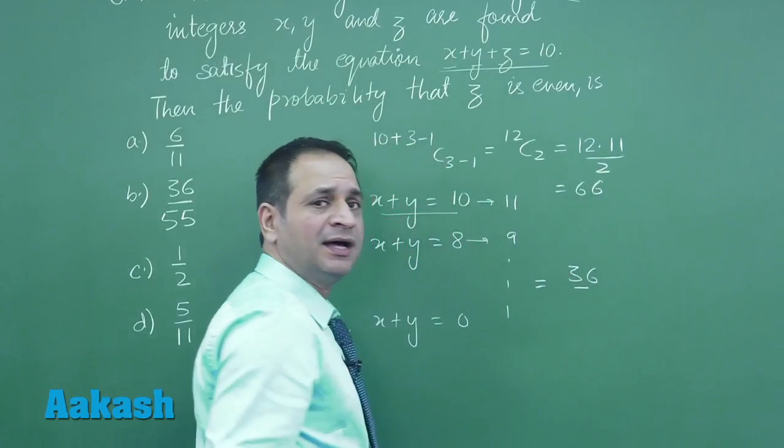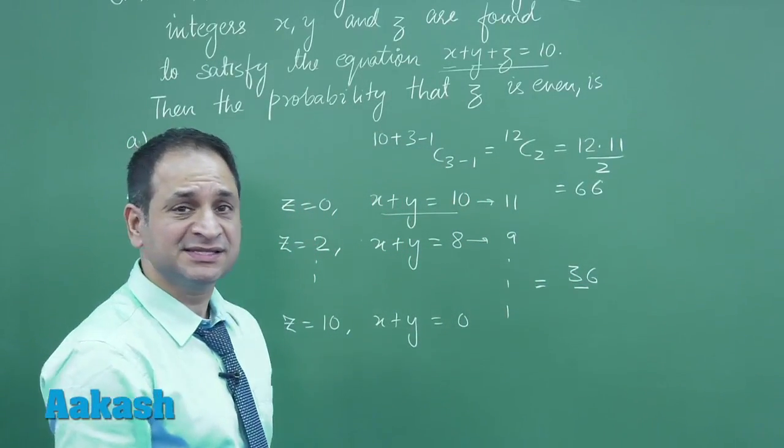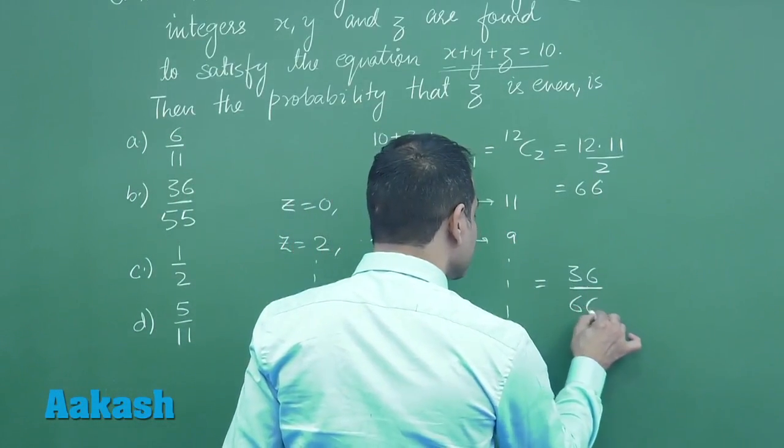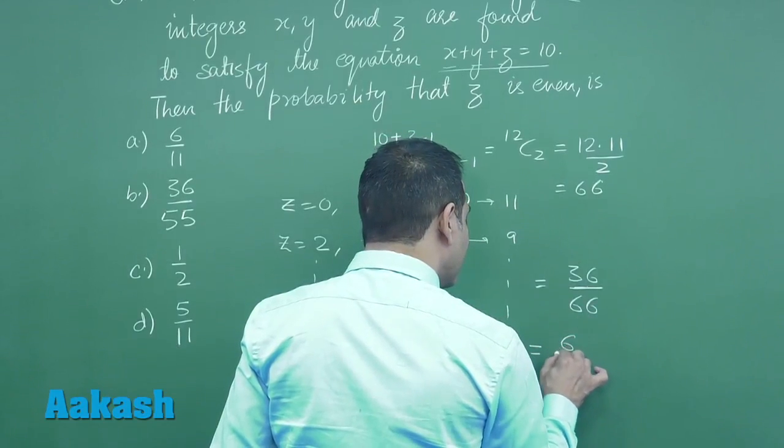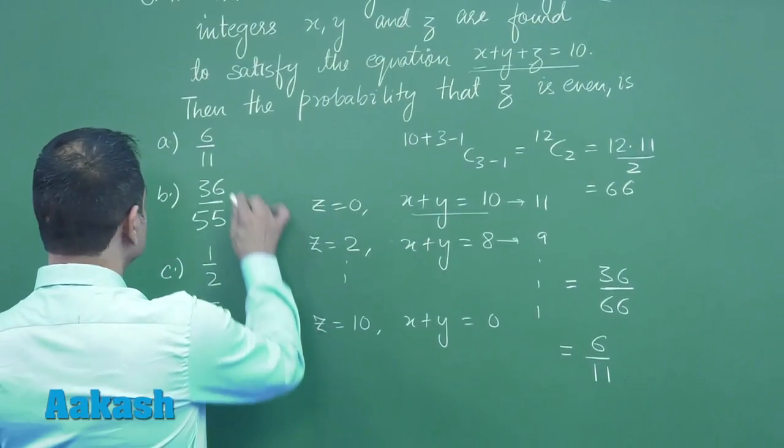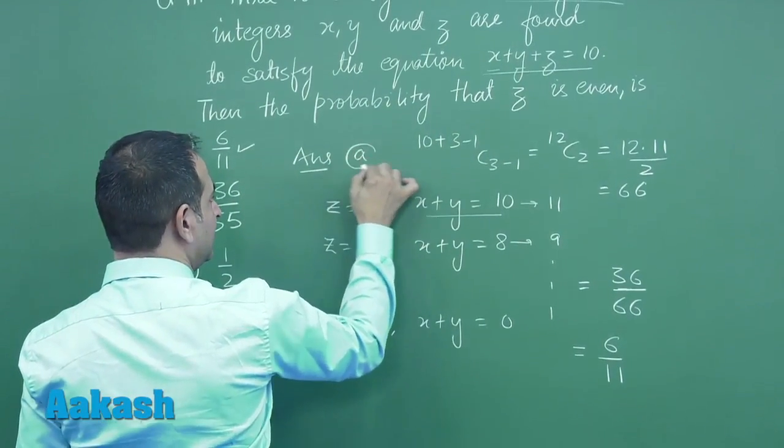So 36 are the favorable cases and total cases we have are 66. So the required probability is definitely 36 by 66, that is 6 by 11. So the correct answer is answer A for us.